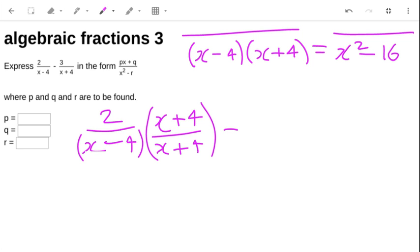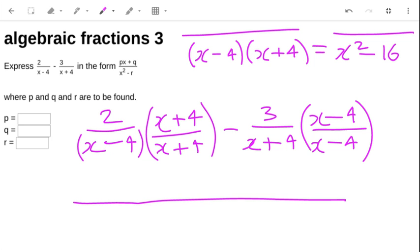And then with the other side, I need to multiply by an x minus 4 on the top and the bottom. So with my big long fraction, that's going to be x minus 4 times x plus 4 for both of them. And then I just need to do some multiplying out.